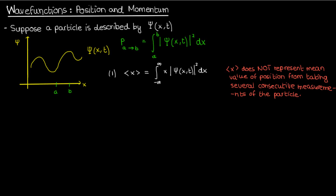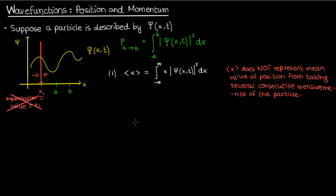Why? Well, if I take one measurement and get a value somewhere here that I'll call x1, then just by taking the measurement, I've actually interfered with the system and collapsed the wave function to a delta function at x1. This phenomenon is called wave function collapse. So if I take repeated consecutive measurements of the position, I'll keep getting x1, and if I take the average of all those consecutive measurements, I'll still get x1, which may not necessarily be equal to the expectation value defined in this equation.